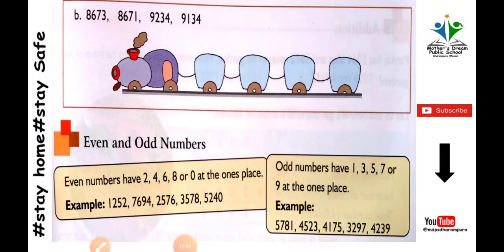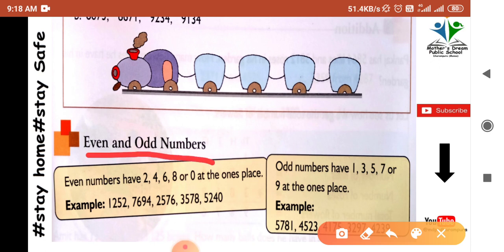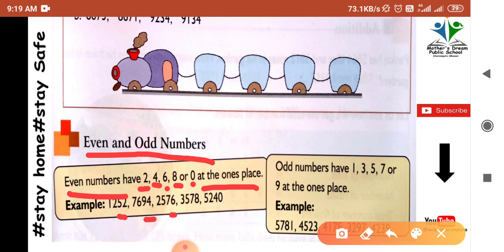Next topic is even numbers and odd numbers. Even numbers have 0, 2, 4, 6, or 8 at the ones place. The ones place is the last digit of the number. If the ones place digit is 2, 4, 6, 8, or 0, then the number is an even number.